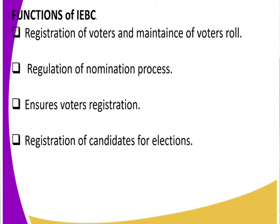There is also the overseeing of the nomination process. Whenever political parties are nominating their representatives for political seats, IEBC oversees that nomination. It also ensures voter registration and civic education — IEBC ensures that people have been registered. As we were nearing the 2017 election, IEBC ensured that those who had attained the voting age were persuaded to register as voters. Also, registration of candidates for elections — you can't go into an election as a candidate if you have not been registered by IEBC. IEBC must recognize and identify you, so it is IEBC that registers candidates for elections.